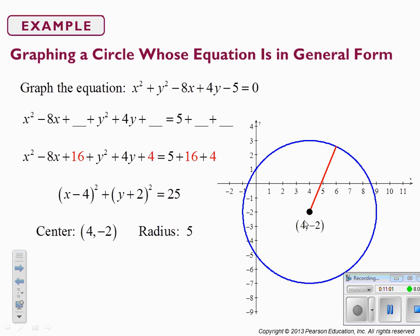To graph this, I place my dot at (4, negative 2), count to the right 5 and put a dot, count north 5 and put a dot, count left 5 and put a dot, count south 5 and put a dot. That way my circle hits at least four points when graphing by hand without a graphing utility.